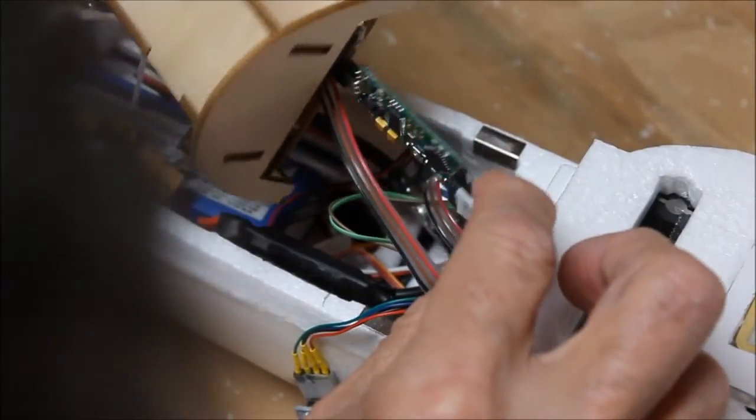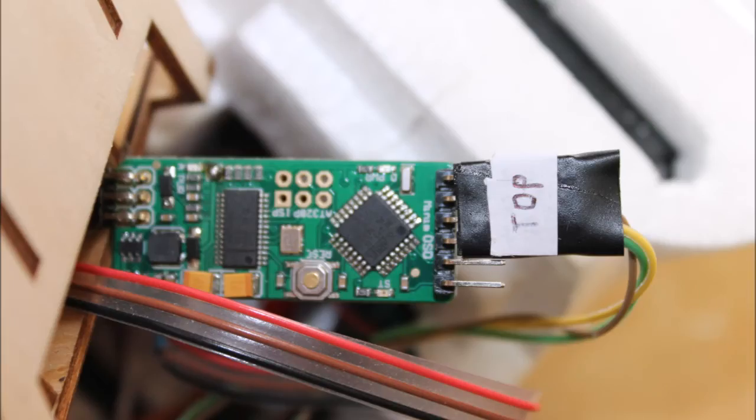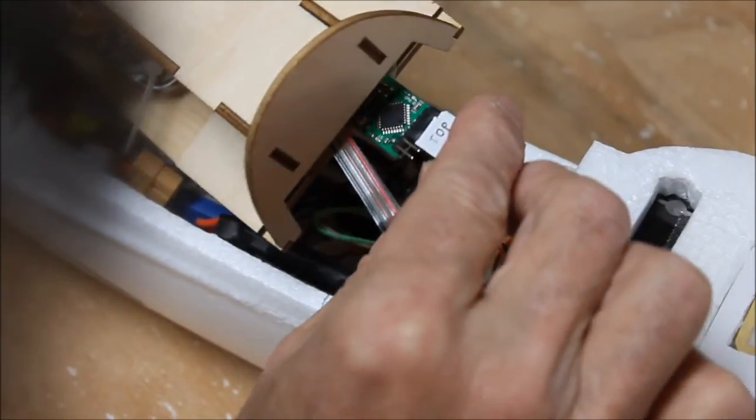Here we are back looking at the FPV cover that comes with the BIX3. Since the minimum OSD board, signal-wise, sits between the camera and the video transmitter, this is a good place to tuck it away.